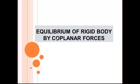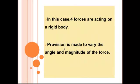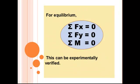Equilibrium of Rigid Body by Coplanar Forces. In this case four forces are acting on a rigid body. Provision is made to vary the angle and magnitude of the force. For equilibrium, summation Fx equal to 0, summation Fy equal to 0, summation M equal to 0. This can be experimentally verified.